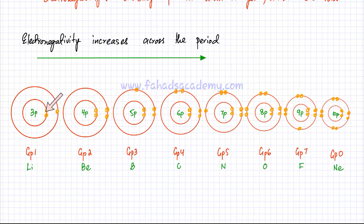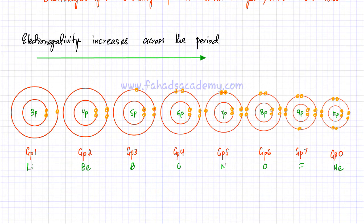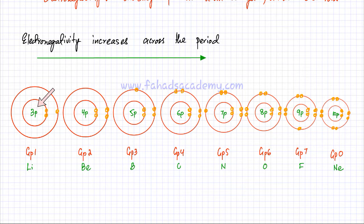As you move across the period, the nuclear charge keeps on increasing — the number of protons in the nucleus keeps on increasing. For example, carbon has 6 protons, nitrogen has 7 protons, oxygen has 8 protons, and fluorine and so on. If you look at fluorine, it has a total of 9 protons, which means the nuclear charge — the positive charge of the nucleus — is plus 9, which is very strong compared to lithium which only has 3 protons.